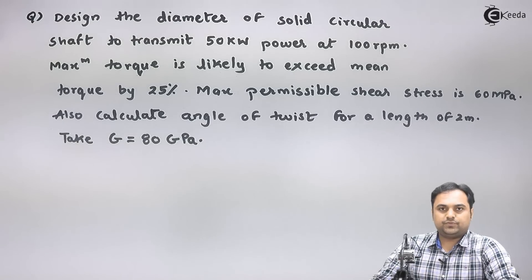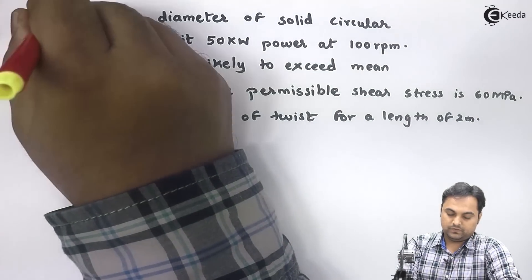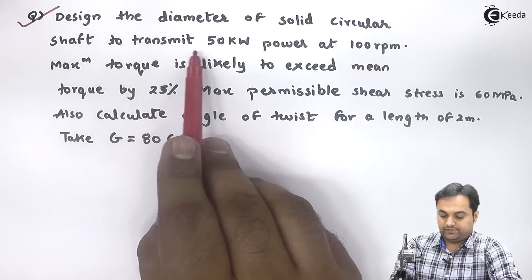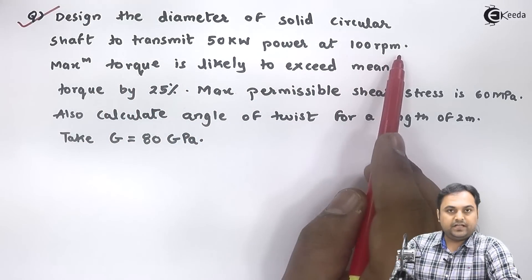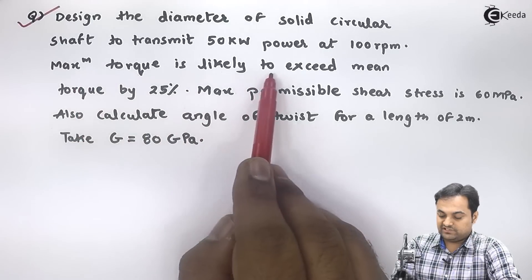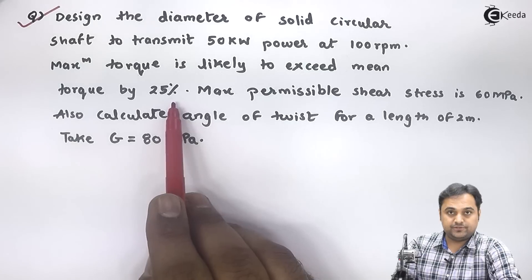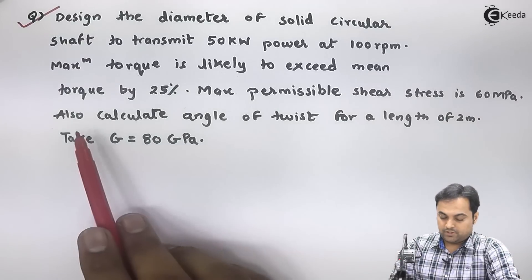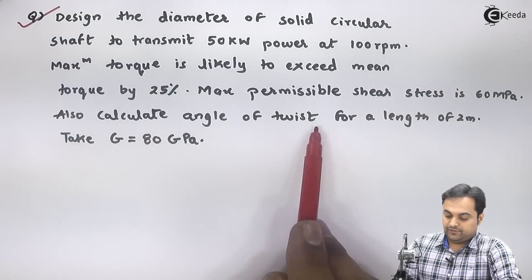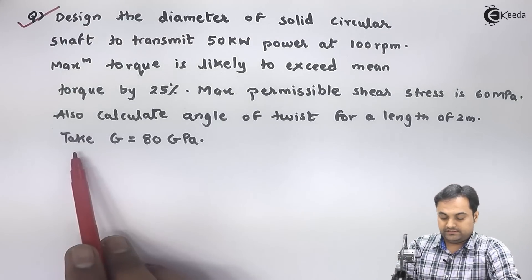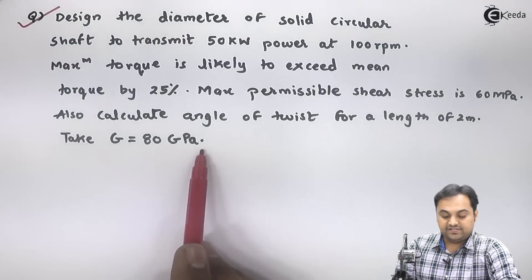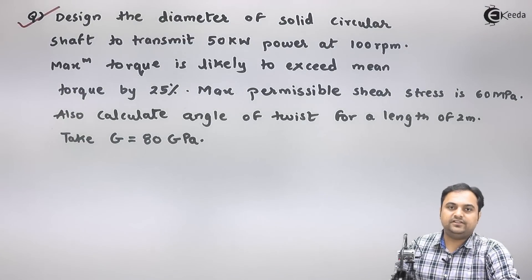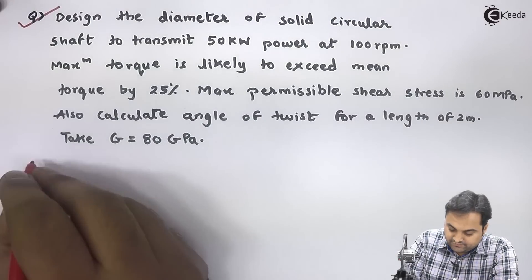Let us take the next question. It is given: design the diameter of a solid circular shaft to transmit 50 kilowatts power at 100 rpm. Maximum torque is likely to exceed mean torque by 25%. Maximum permissible shear stress is 60 megapascal. Also calculate the angle of twist for a length of 2 meters. Take G as 80 GPa. This is the question in front of us — I will write the data first.